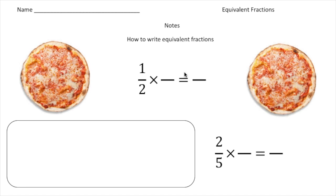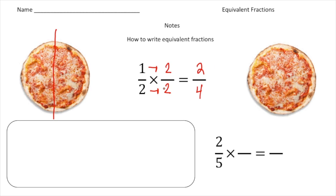To diagram this, we have two identical pizzas here on the screen. Let's say we want to divide this first pizza in half — take your pencil and divide it in half just like this. So the left-hand side, that's one half of a pizza. Now to write a fraction equivalent to one half, you multiply the one half — both the one and the two — by the same factor. I'm going to pick the number two, so I'm going to multiply one half by two over two. When you multiply fractions, you multiply straight across: one times two is two, and two times two is four. So two fourths is the same as one half.